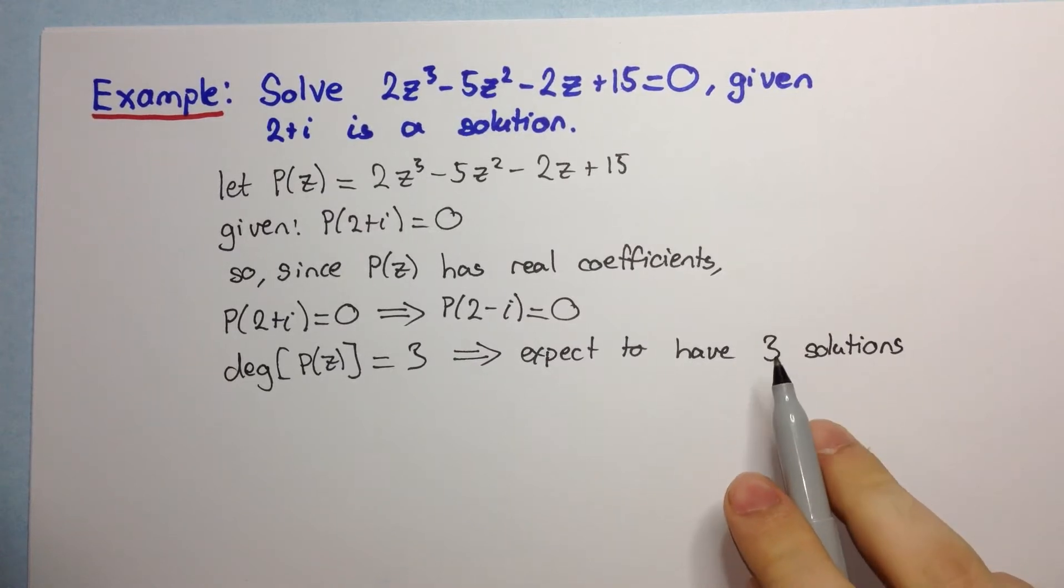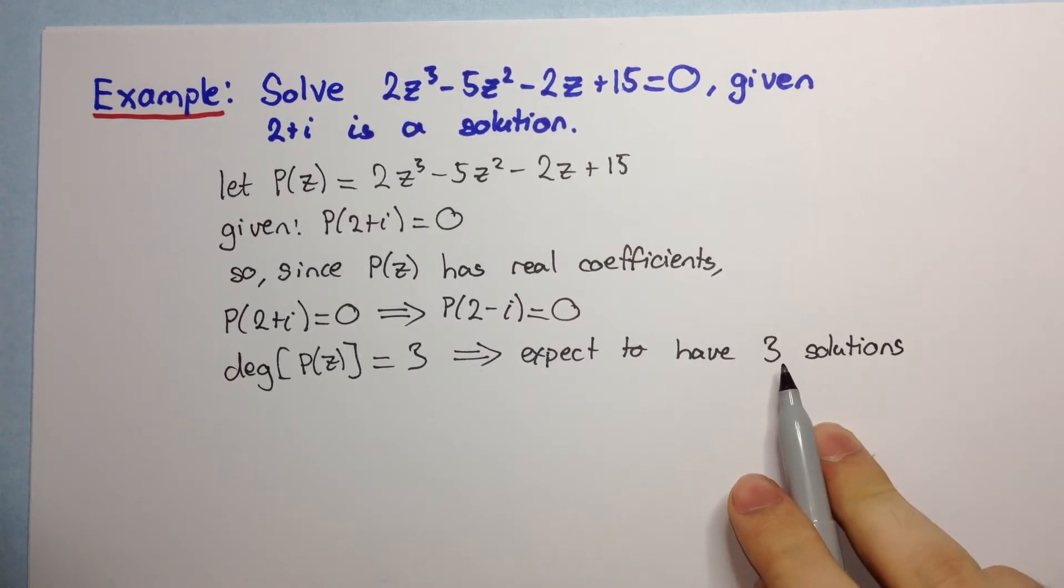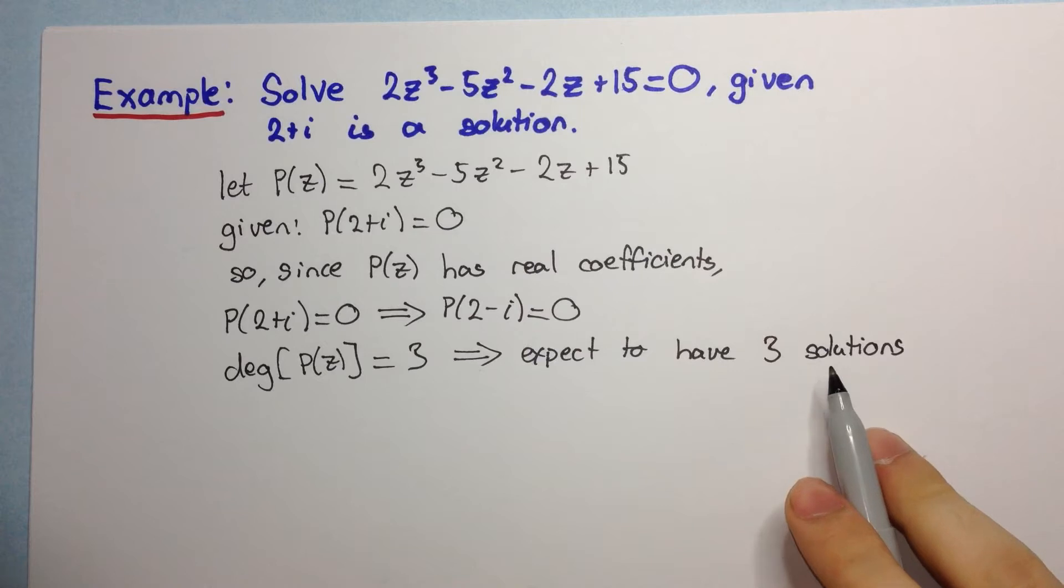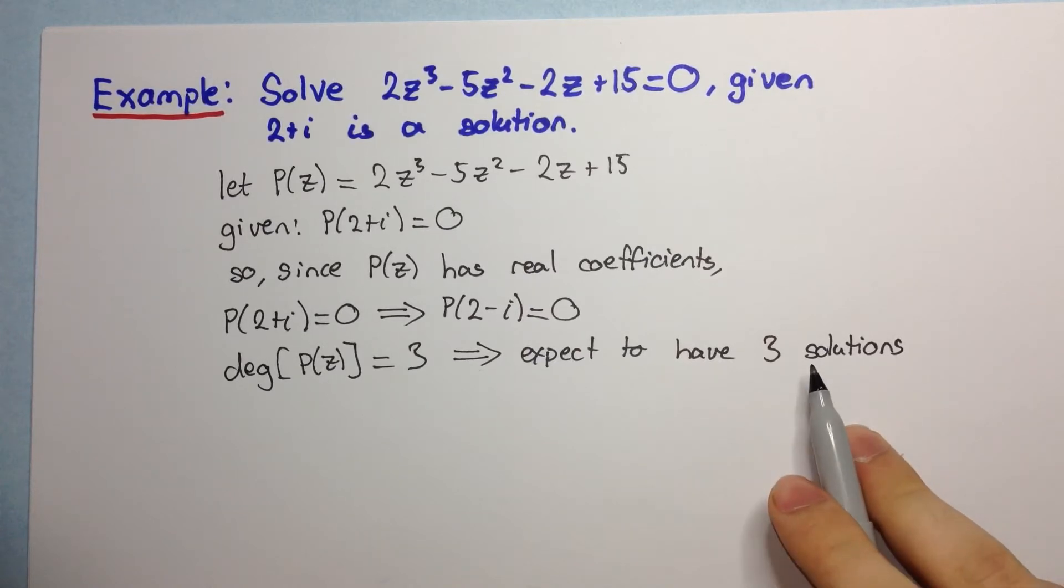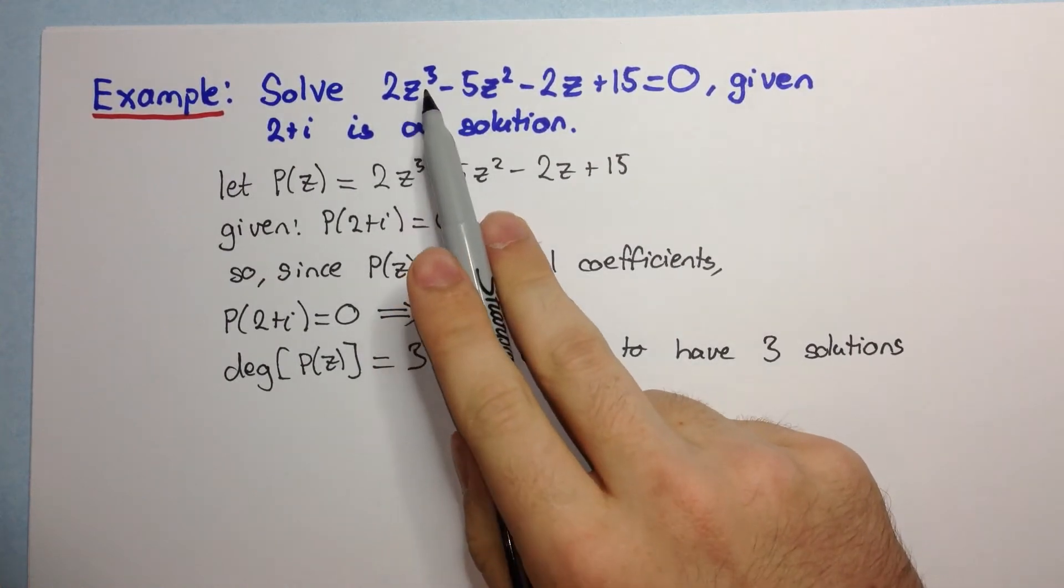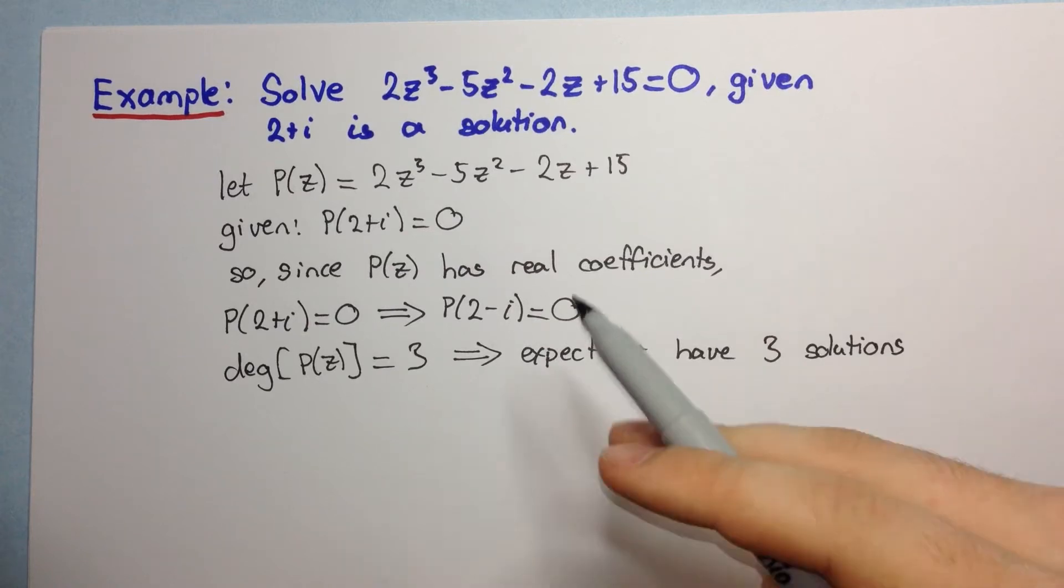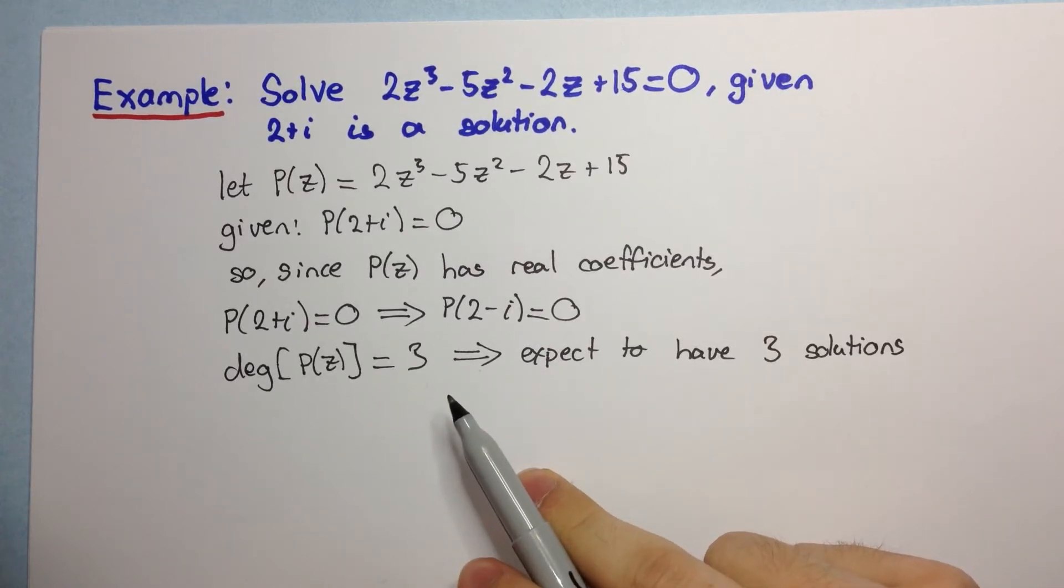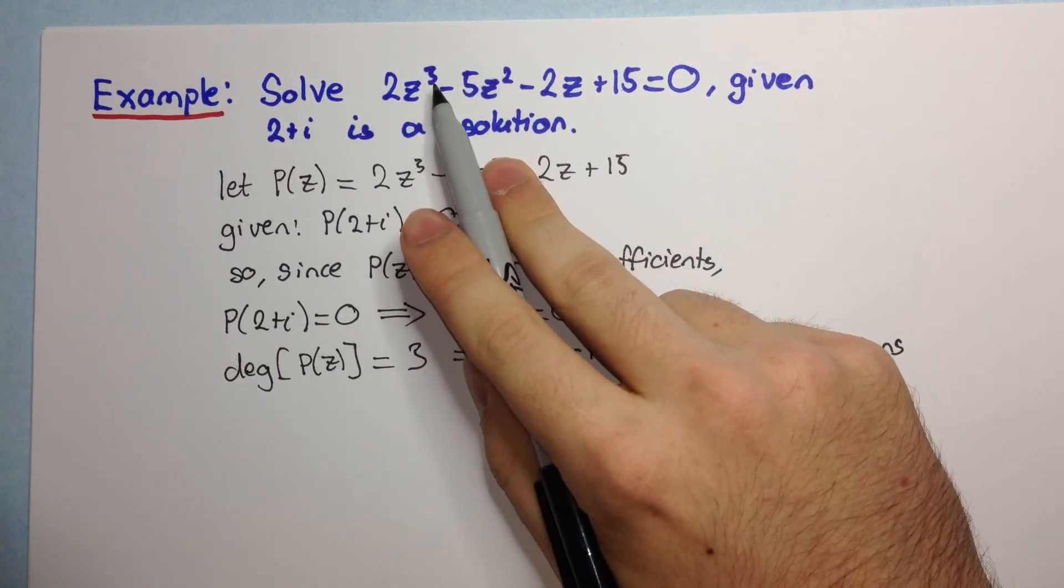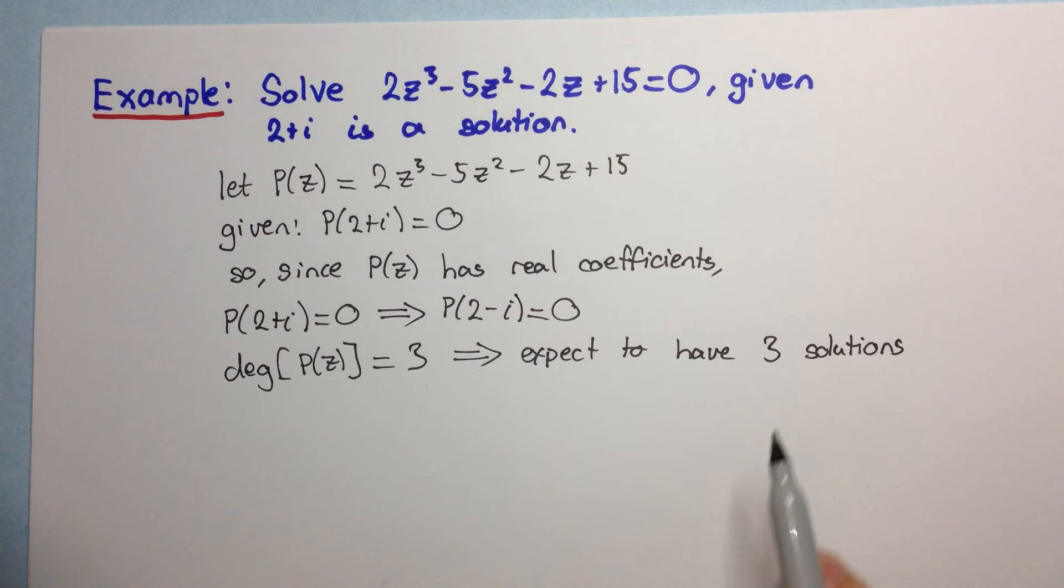Now, the reason for this is something called the fundamental theorem of algebra. The proof of that is quite difficult and beyond the scope of the course, but all it says is that any polynomial of degree n has exactly n solutions in the complex field. So, here we have a degree 3 and so we expect to have three solutions.